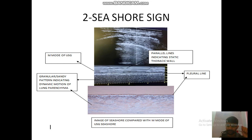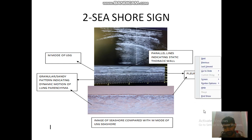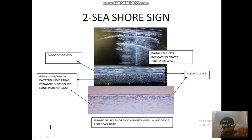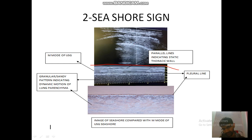Coming to the second sign — the seashore sign. It is seen in normal lung parenchyma when you turn the M-mode on. There are two images: the upper image is the ultrasound image and the below is the shore of a sea, added in parallel for comparison. The upper image can be divided into two parts. When you place the probe on the chest wall, you see the parietal pleura as a hyperechoic white line, and whatever is seen above it is your chest wall — muscles, subcutaneous tissue, skin. Below the parietal pleura is your lung.